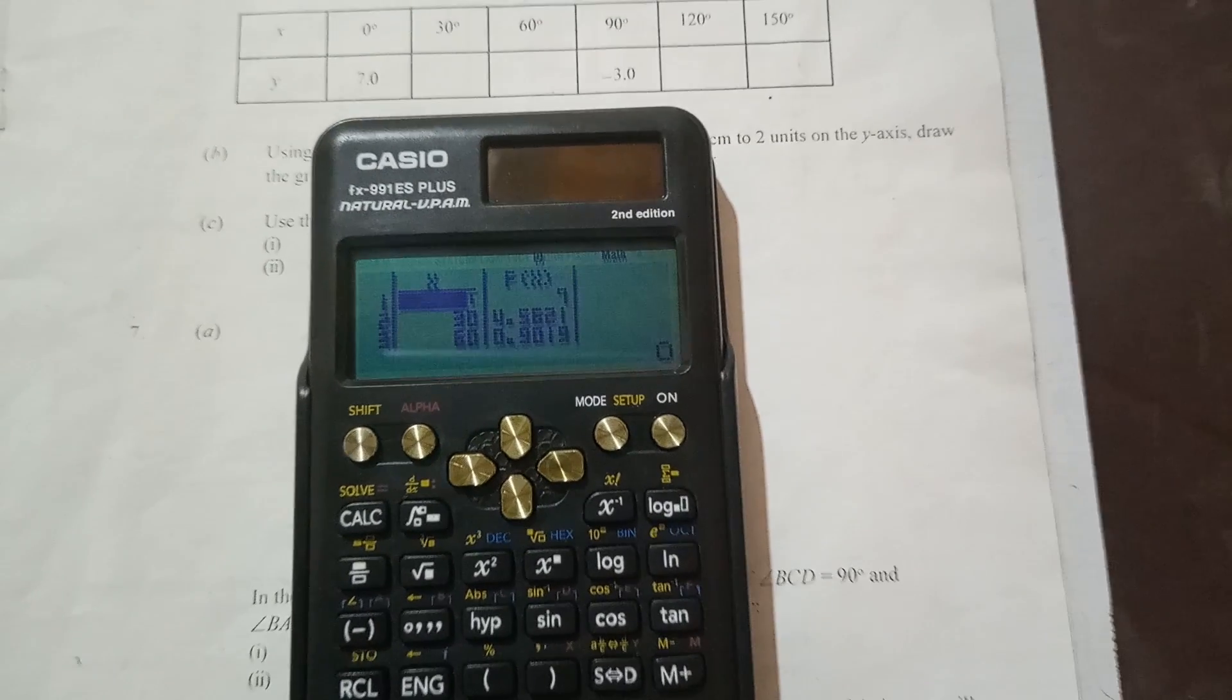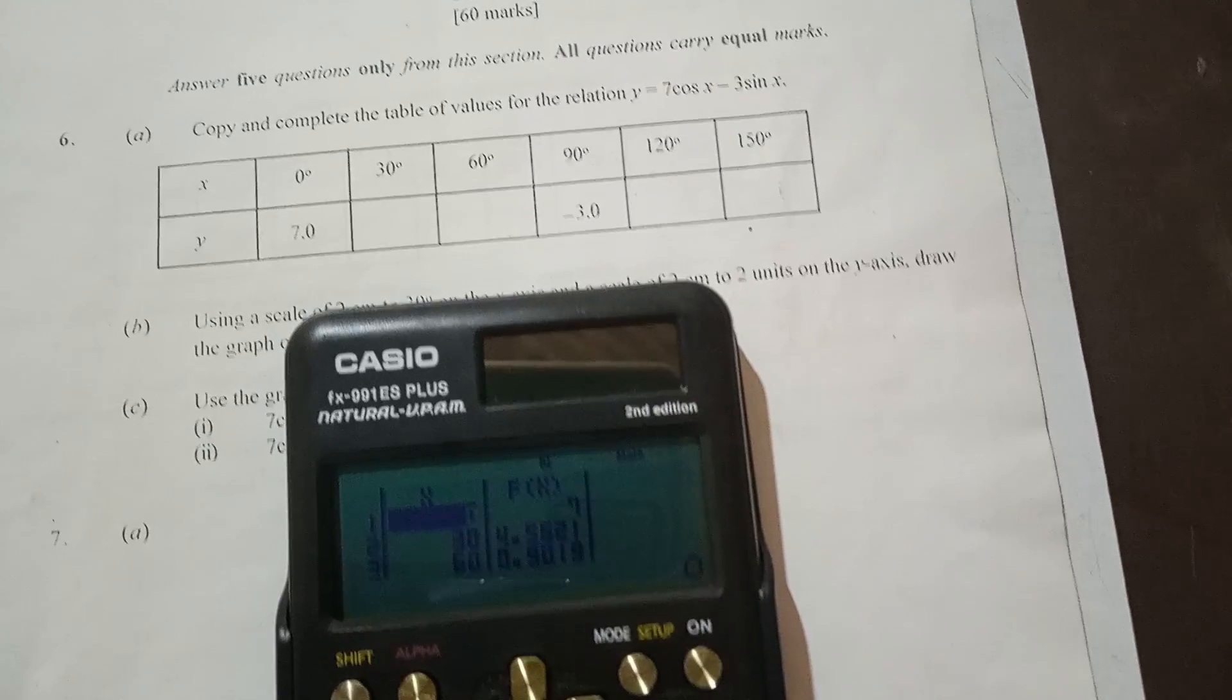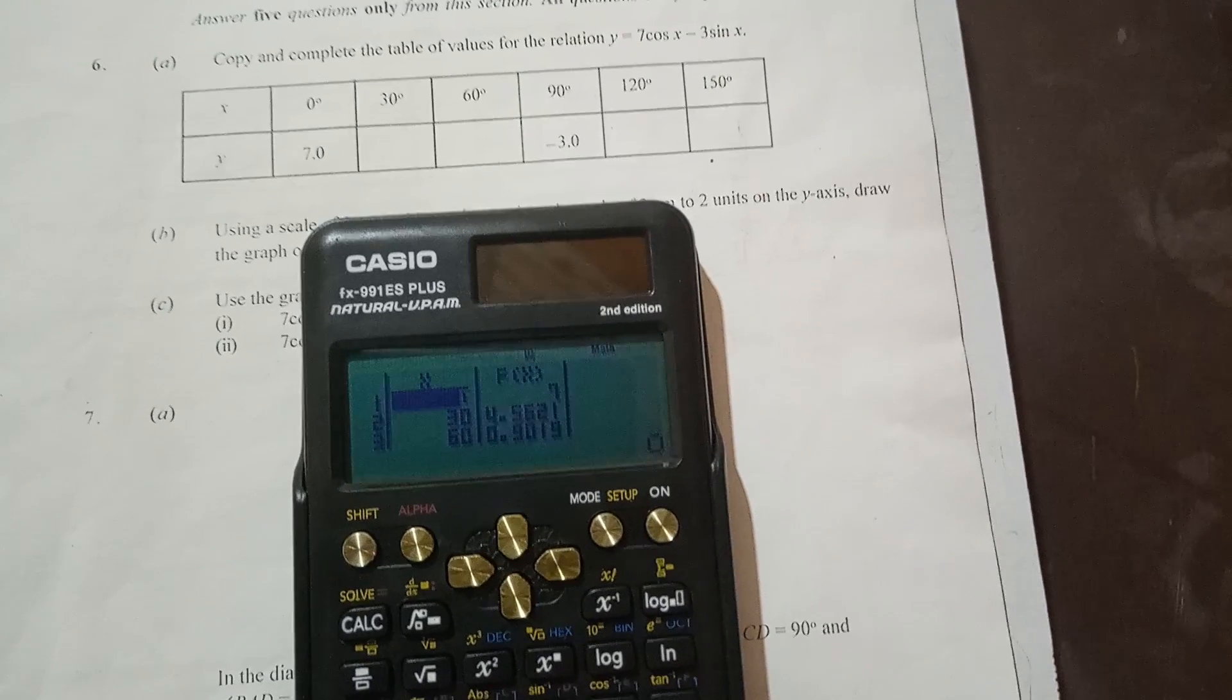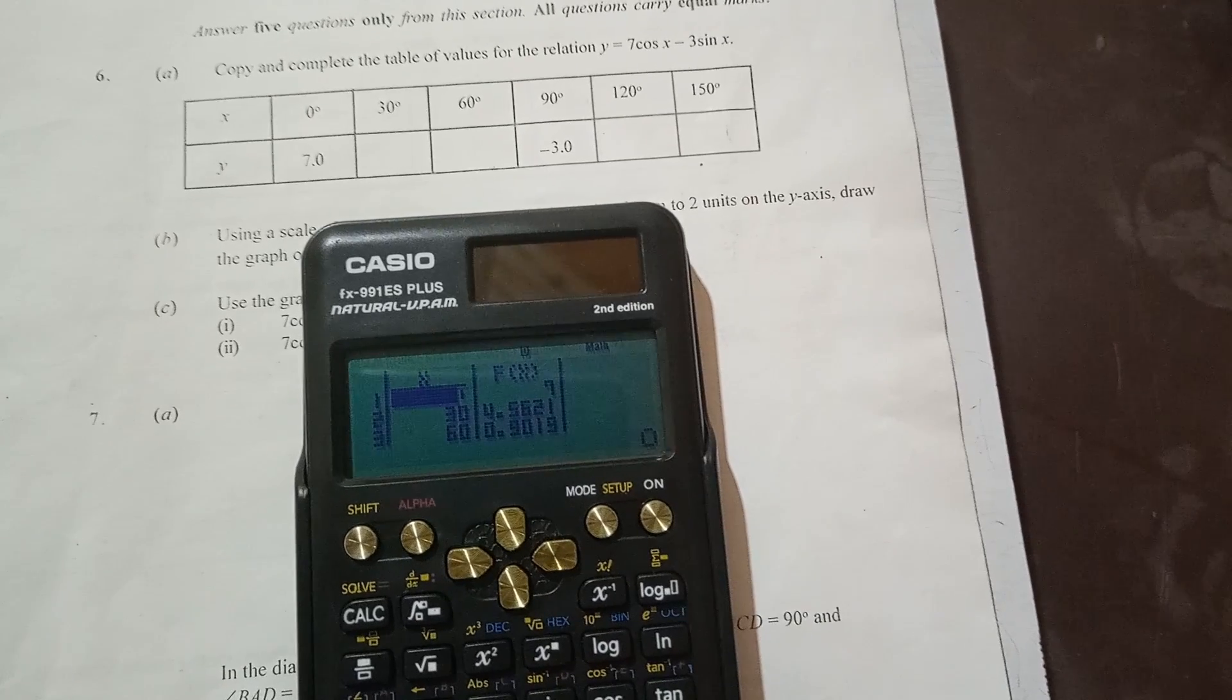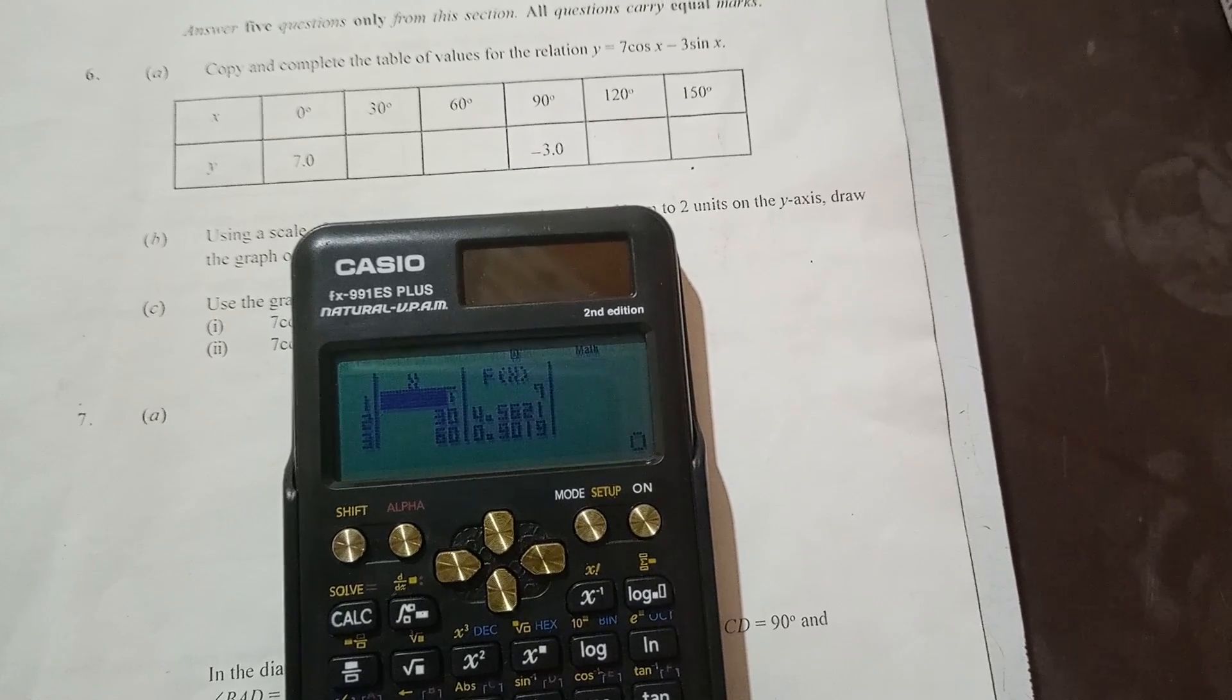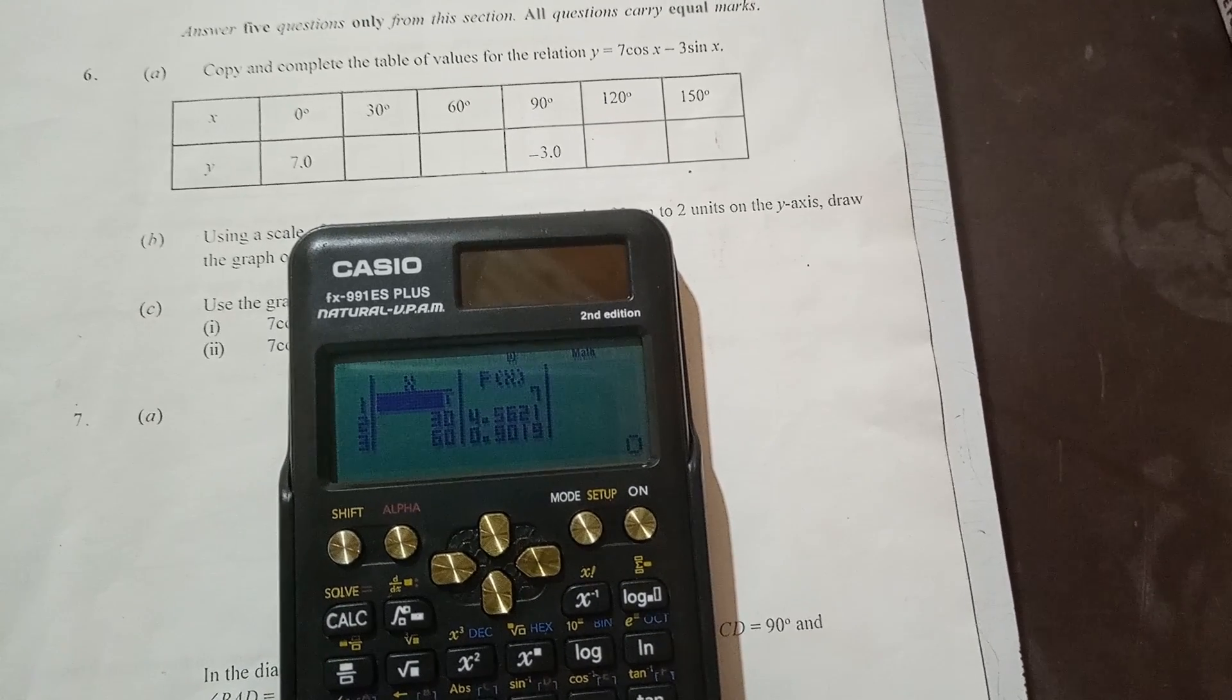And here we have our table with the values. Looking from the table, the question put our answers to one decimal place, so we will round all our answers to one decimal place. You can see that for 0, the y value is 7, and in the table is 7.0. So for 30, the y value is 4.5621, but we are doing it to one decimal place, so it will be 4.6. Then for 60, it is 0.9.